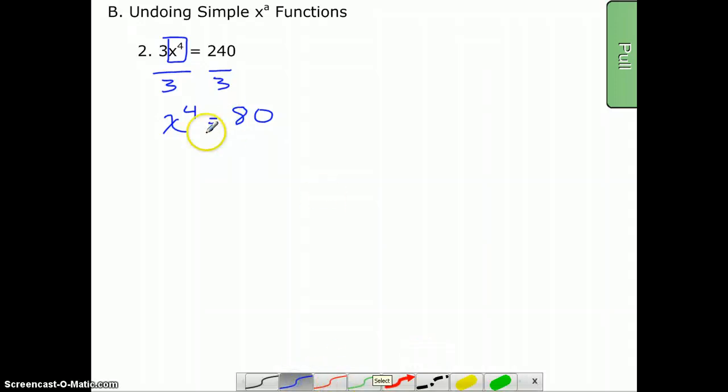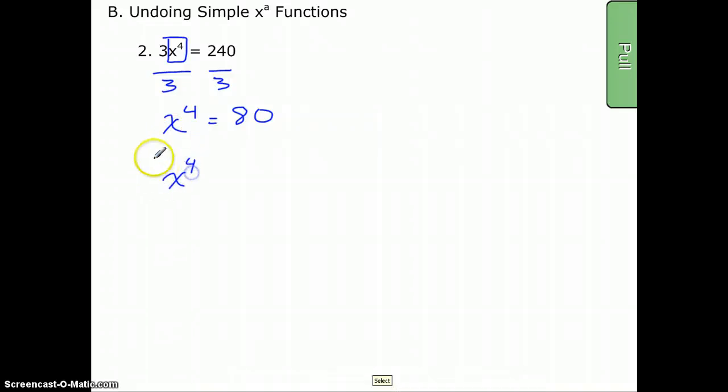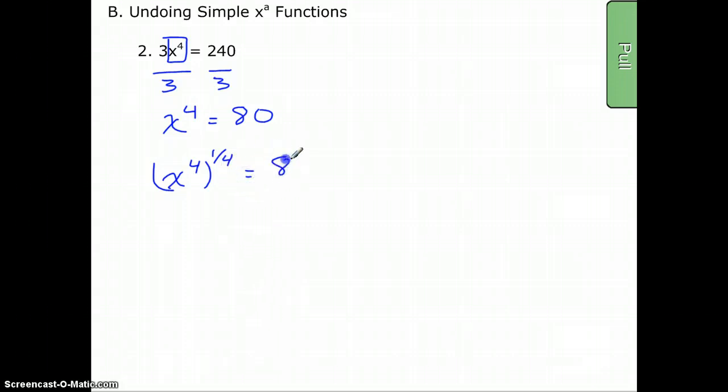So how do we undo this? We're going to take the x^4, and in parentheses here, I'm going to raise it to the one-fourth power. I want to get rid of that guy. One-fourth. And what I do to one side, I have to do to the other. This is not going to be an exact answer.